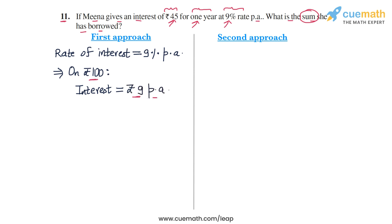The way we can express this observation is that an interest rate of rupees 9 per annum per year corresponds to a principal amount, a sum of rupees 100. Now I will apply the unitary method to this observation.